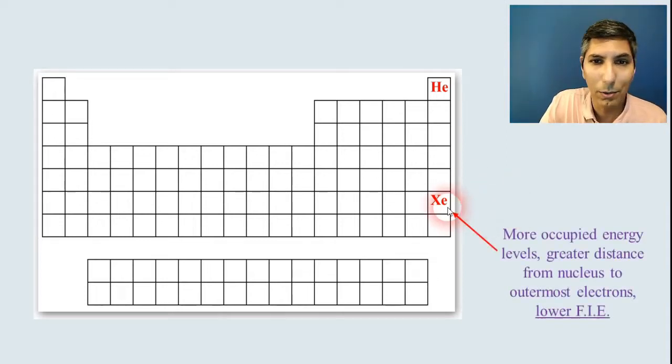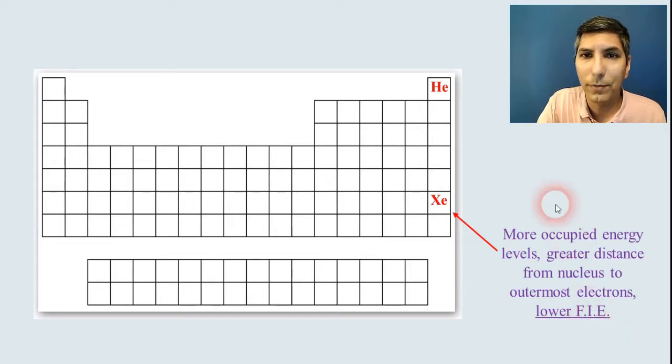Now xenon is lower. Why? Well, more occupied energy levels, which means there's a greater distance from the nucleus to those outermost electrons. So it's going to be easier to remove that last electron. Lower first ionization energy.